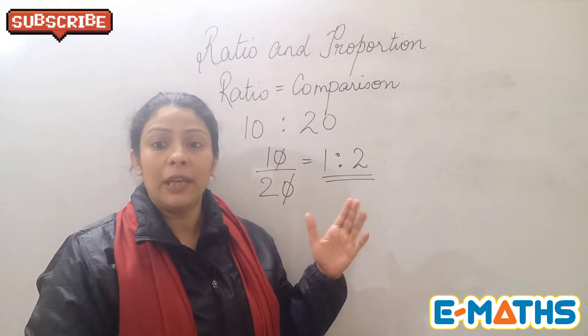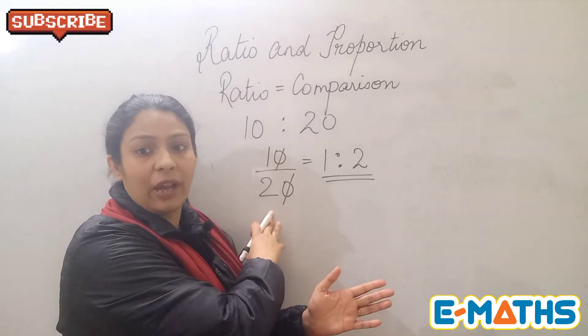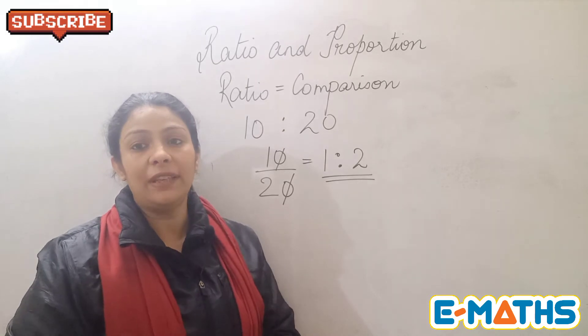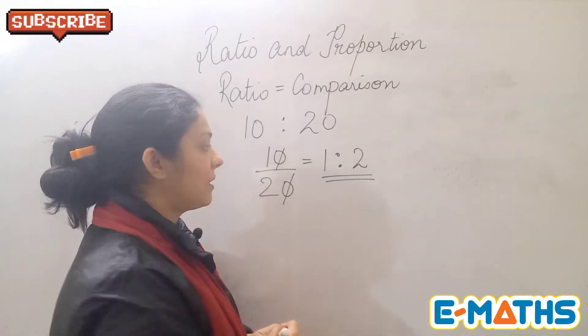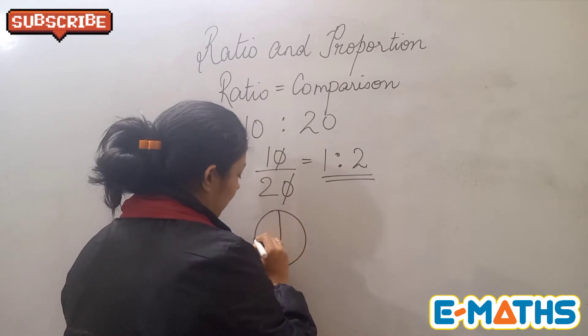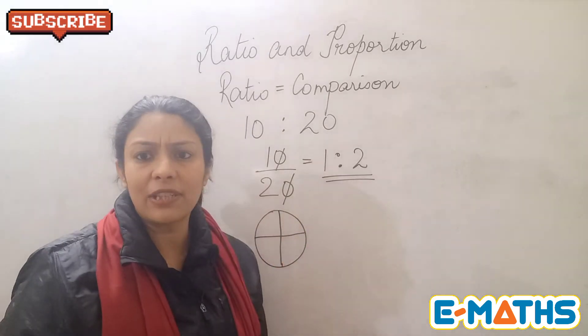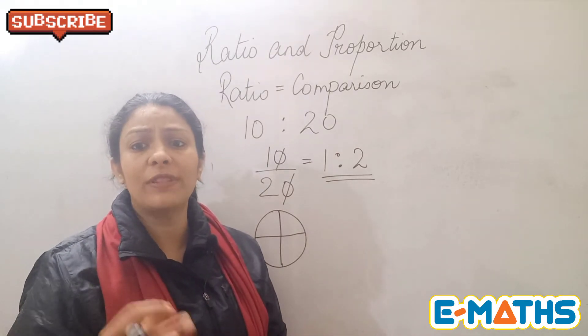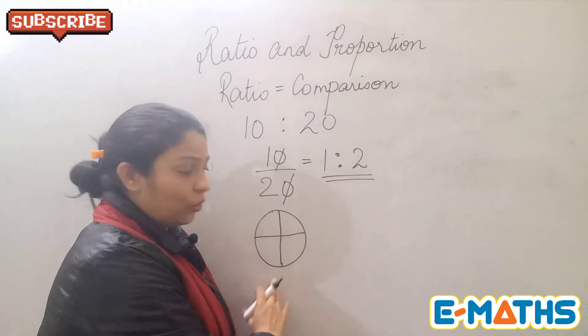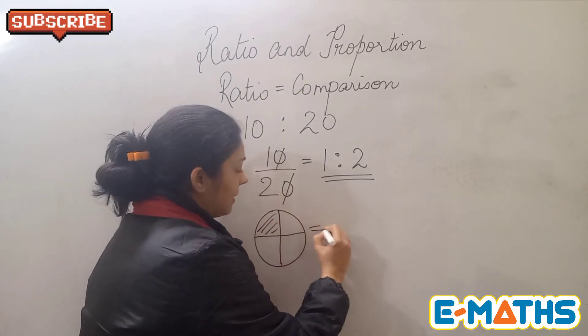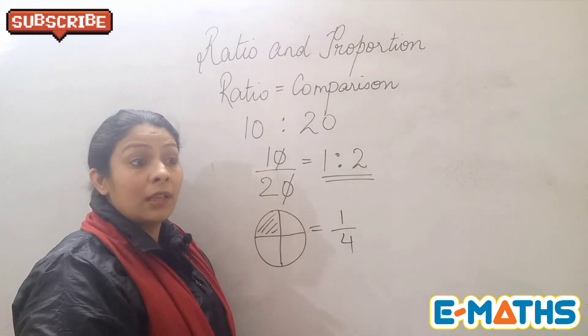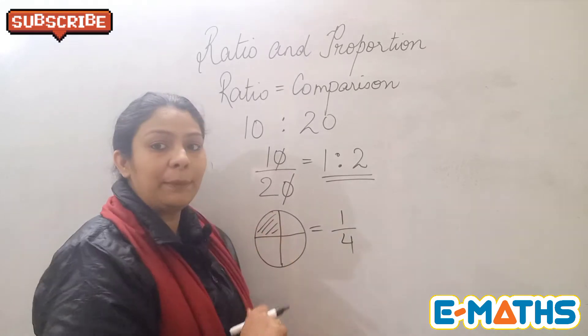It is like here we have written it in the form of fraction, but we cannot say that ratios are fractions. Because if we take the example of a pizza, let's take an example of a pizza and I'm going to divide it into four equal parts. So fraction is actually part of a whole, which I've already taught you in the previous video. Fraction is a part of whole. So if I've eaten this part of this pizza, I will say I have eaten one out of the four pieces.